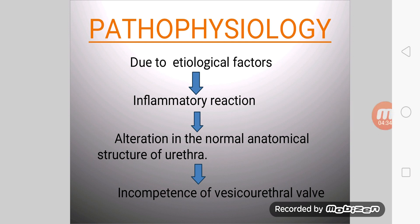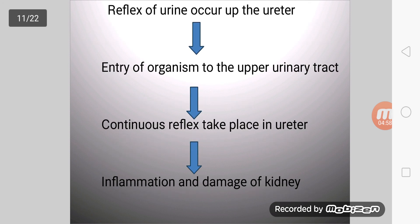Now we deal with the pathophysiology. Due to etiological factors, an inflammatory reaction occurs. Infection leads to inflammation, which causes alteration in the normal anatomical structure of the ureter. Then, incompetence of the vesicoureteral valve occurs, leading to reflux of urine up the ureter. This allows entry of organisms into the upper tract, and continuous reflux causes inflammation and damage of the kidney.